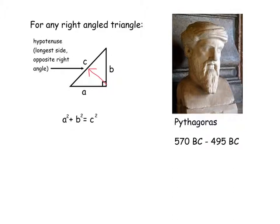So Pythagoras' theorem says that if you square the two shorter sides, which are called a and b, and add them together, then you get the square of the longer side. So the square means the number times itself. So c squared is c times c, whatever c might be.